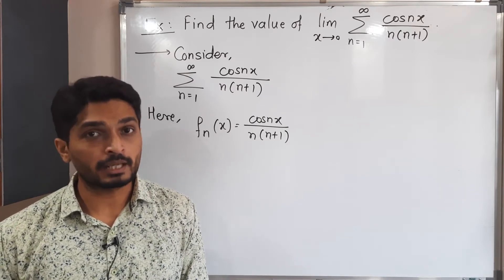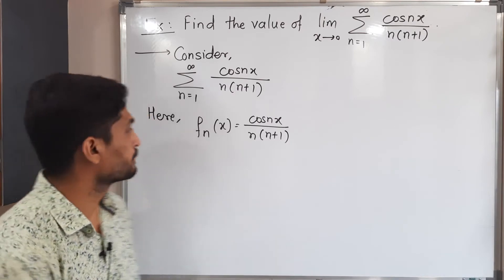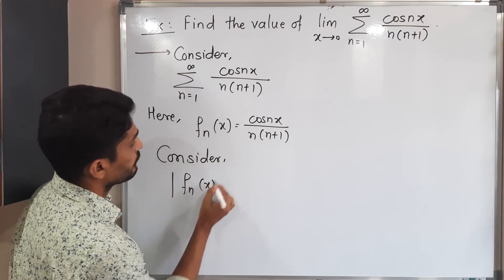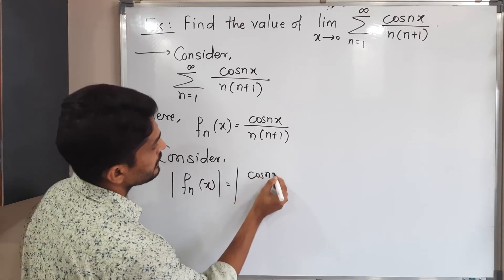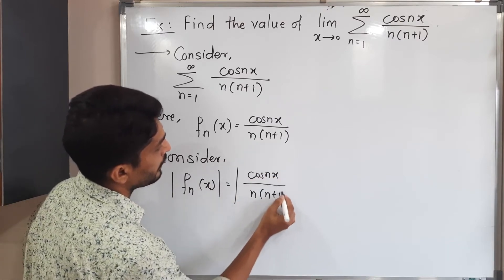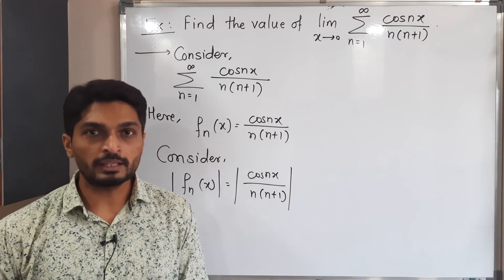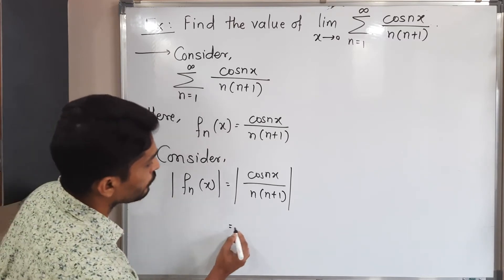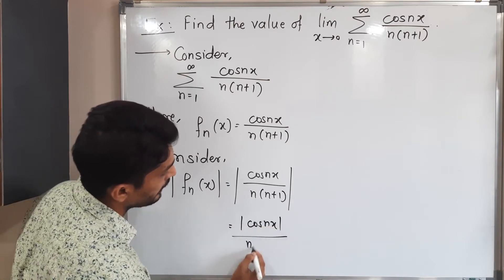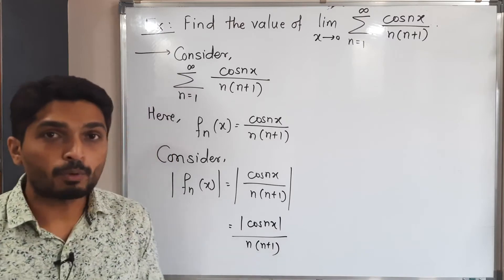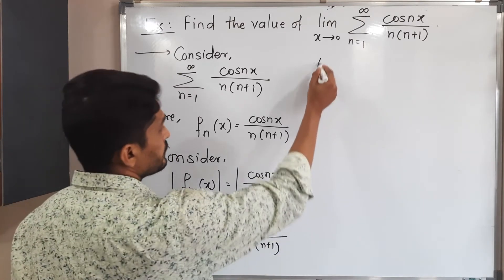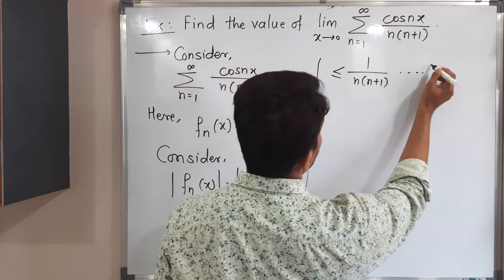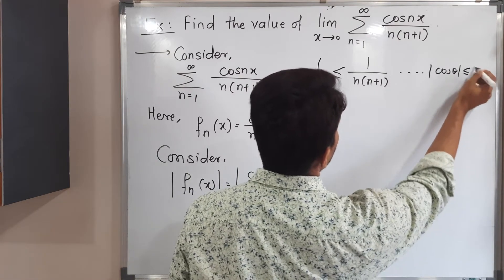In the Weierstrass M-test, we take the modulus of f_n(x). Consider |f_n(x)| where f_n(x) = cos(nx) / [n(n+1)]. Since n is a natural number, n(n+1) is a positive real number, so there is no need for a modulus on the denominator. We take the modulus of the numerator only: |cos(nx)| / [n(n+1)]. We know that |cos θ| is always less than or equal to 1, so this is less than or equal to 1 / [n(n+1)].